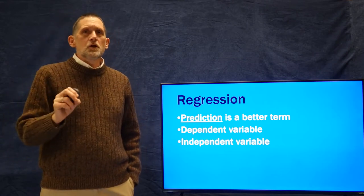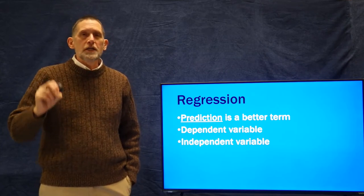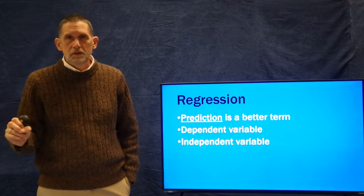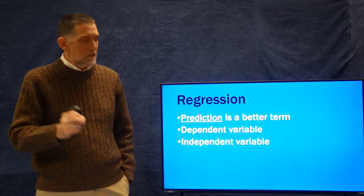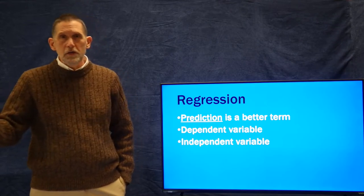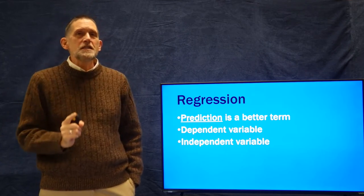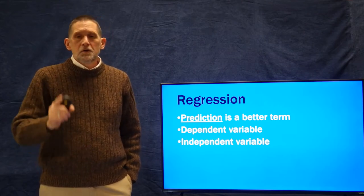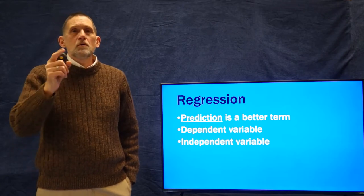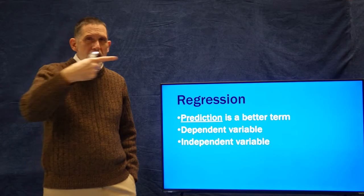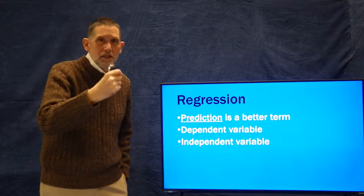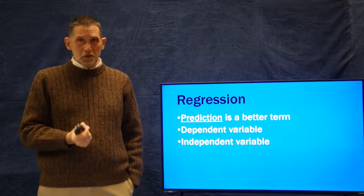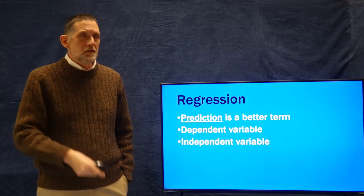We have two types of variables: dependent and independent. The independent variable is free to vary in a regression or prediction model. The dependent variable is seen as dependent on the value of the independent variable — in other words, the independent variable predicts the value of the dependent variable. The dependent variable's value is dependent on the independent variable. That may seem complicated right now, but it'll be obvious in a little bit.